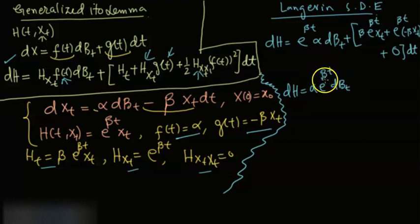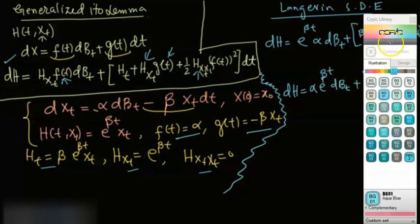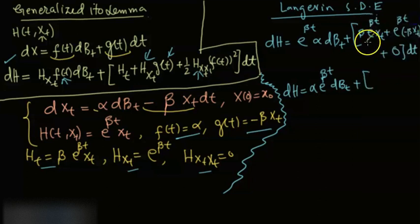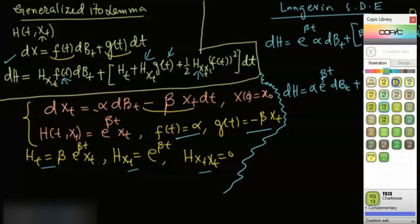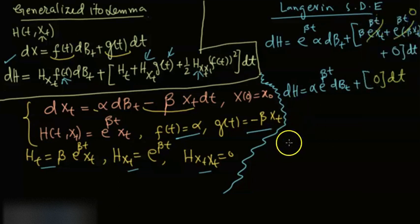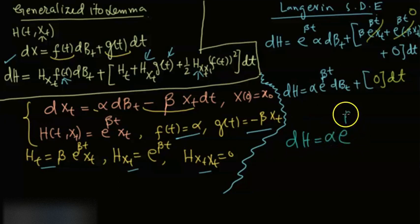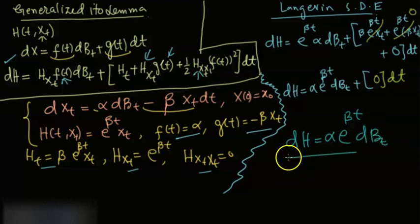You can carefully see that the β·e^(βt)·X(t) term cancels with the −β·e^(βt)·X(t) term, so the dt term is zero. This gives us simply: dh = α·e^(βt)·dB(t). Now we can integrate both sides.